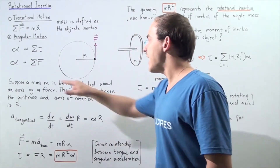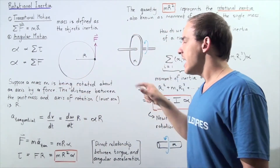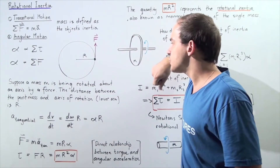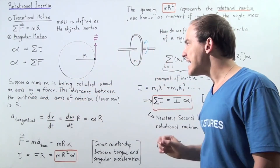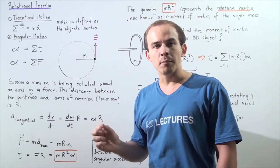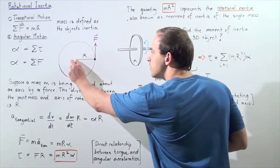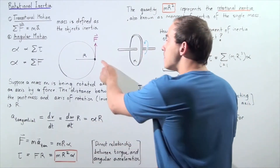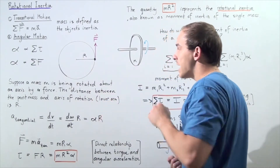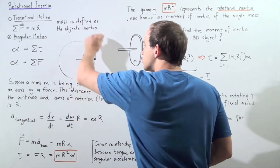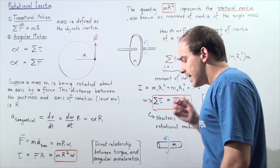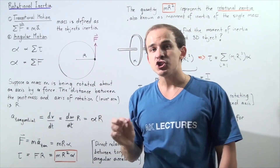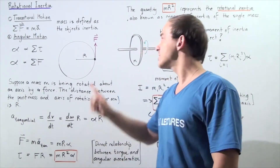Suppose we have a mass M being rotated about an axis of rotation by a certain force. The distance between the point mass and the axis of rotation is known as the lever arm, given by R. This line is a massless board — negligible mass because the mass of the point is much higher than the mass of the board. This force is causing our object to rotate in circular motion. Because the object is moving in circular motion, it has a tangential acceleration pointing in the same direction as the force.